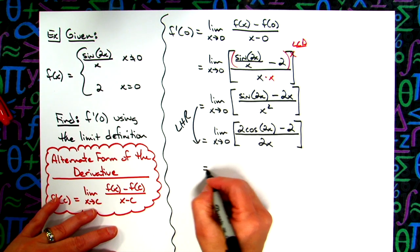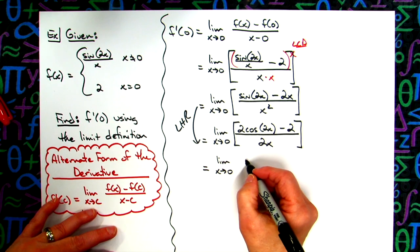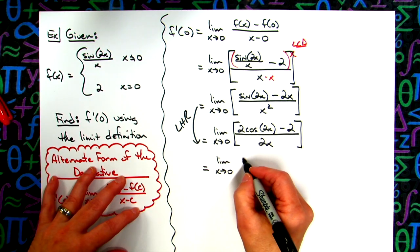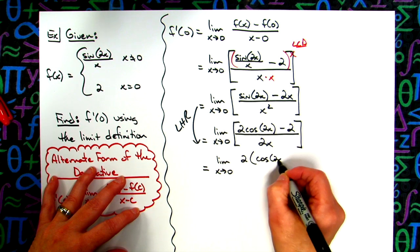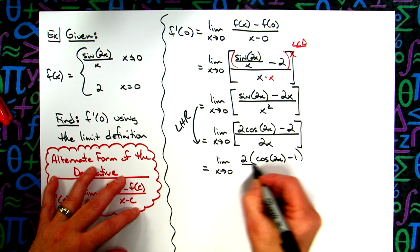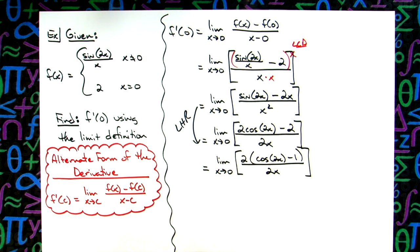So a little bit of algebra manipulation, so we'll have the limit as x approaches 0. Let's go ahead and show all the algebra steps there, we'll take out the 2, so we'll have cosine of 2x minus 1, all over 2x. We'll put in those square brackets, that's going to allow me to cross out this 2 with this 2.